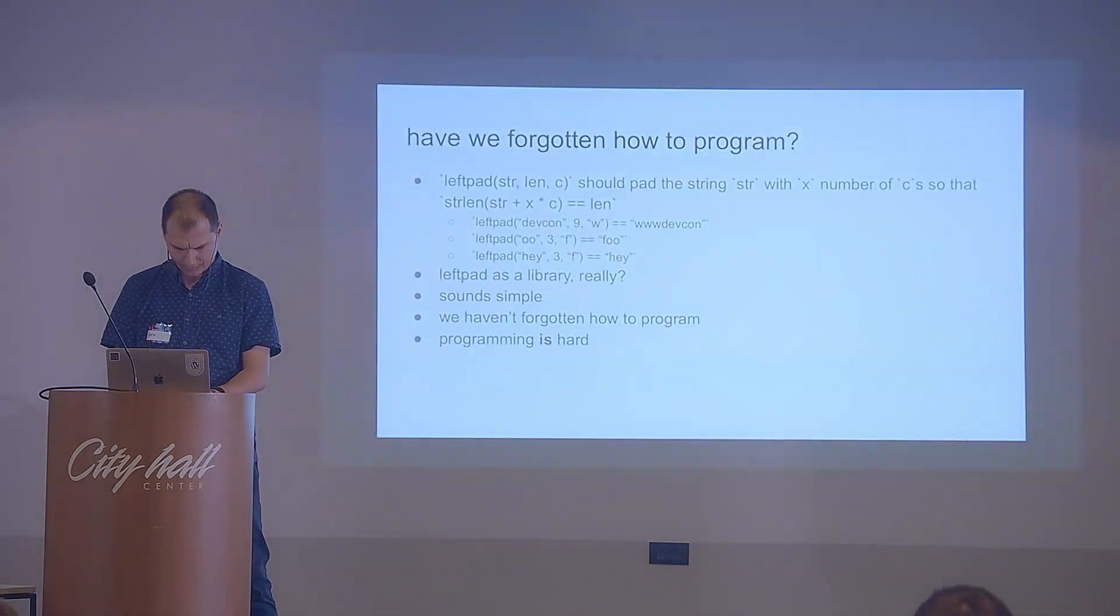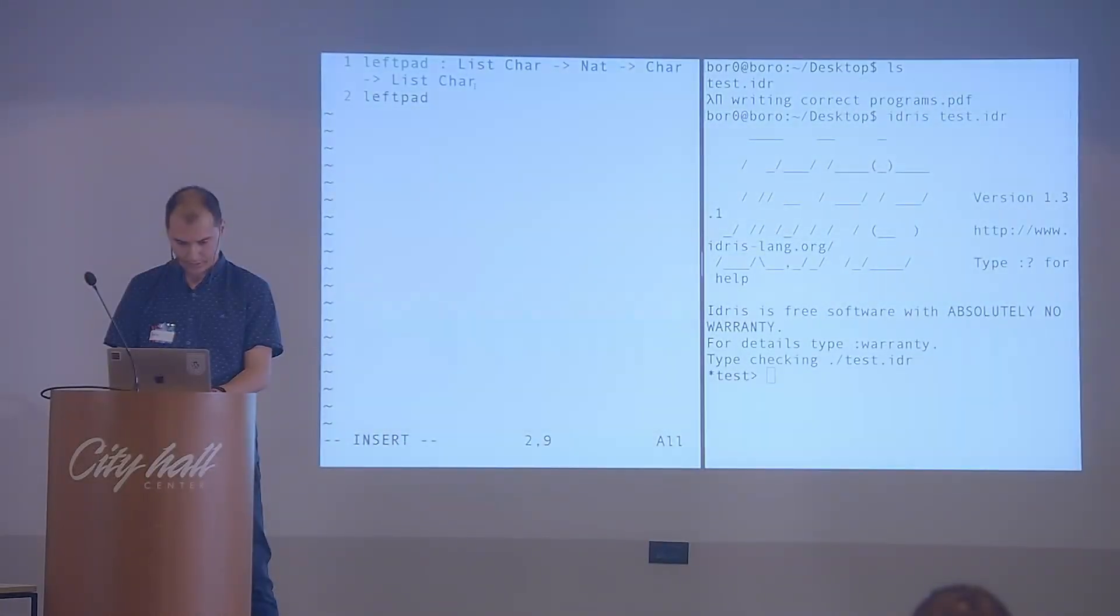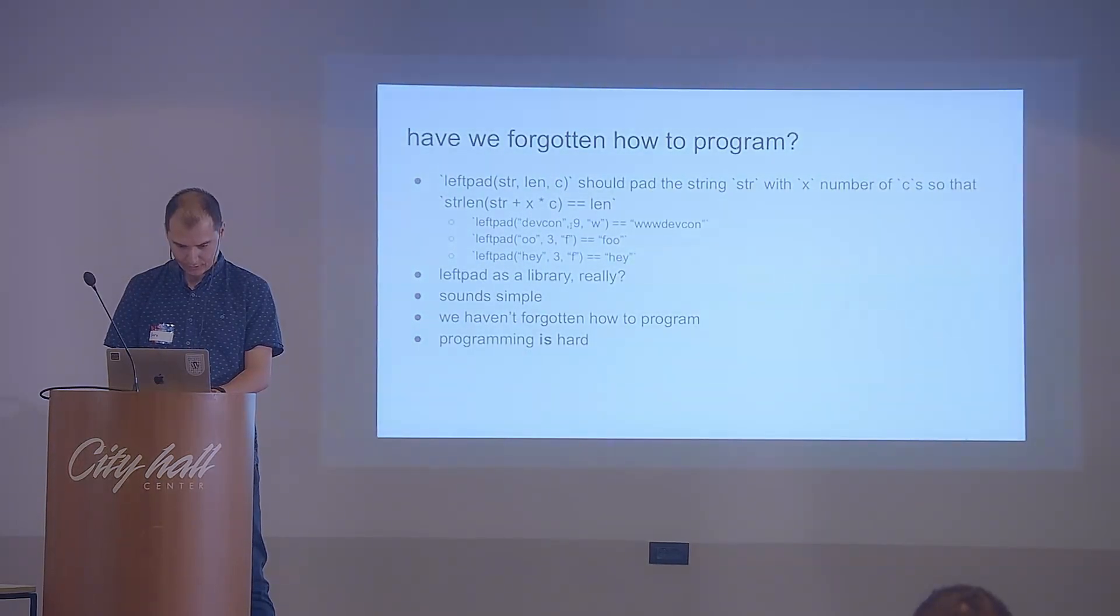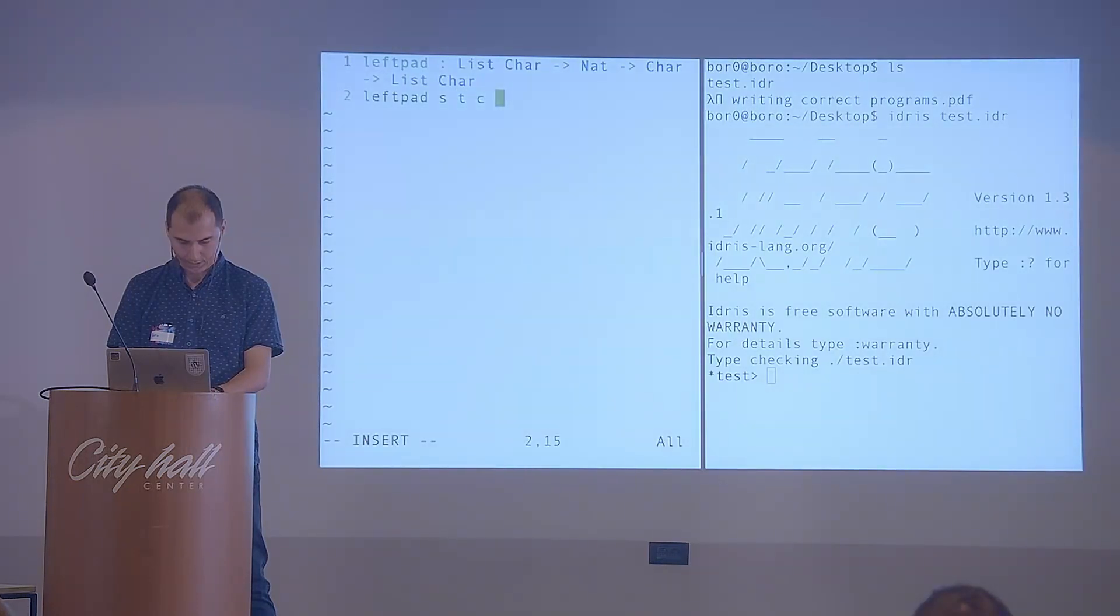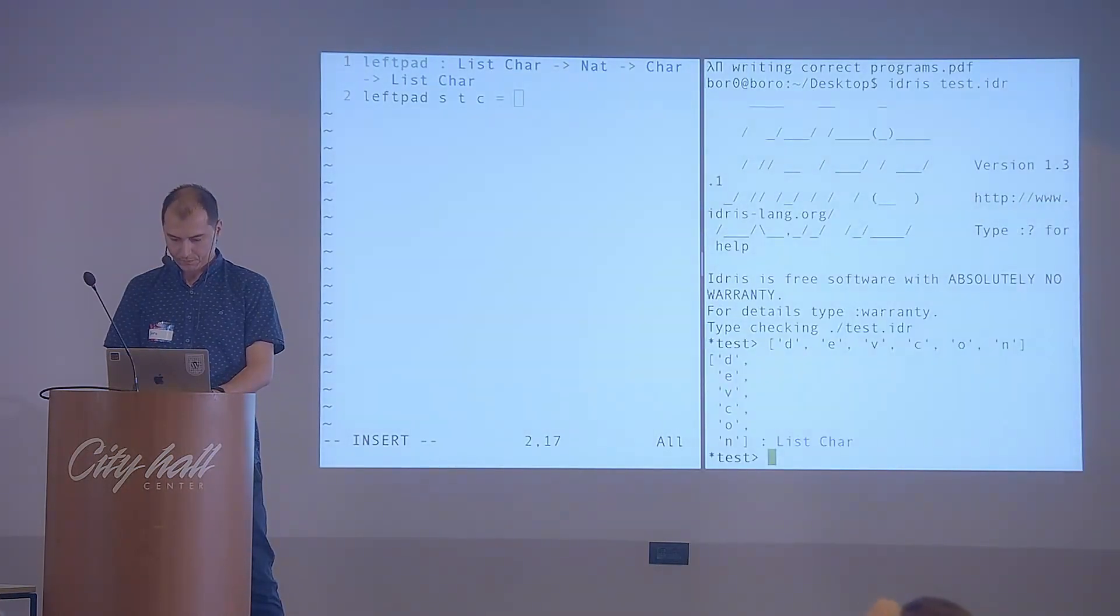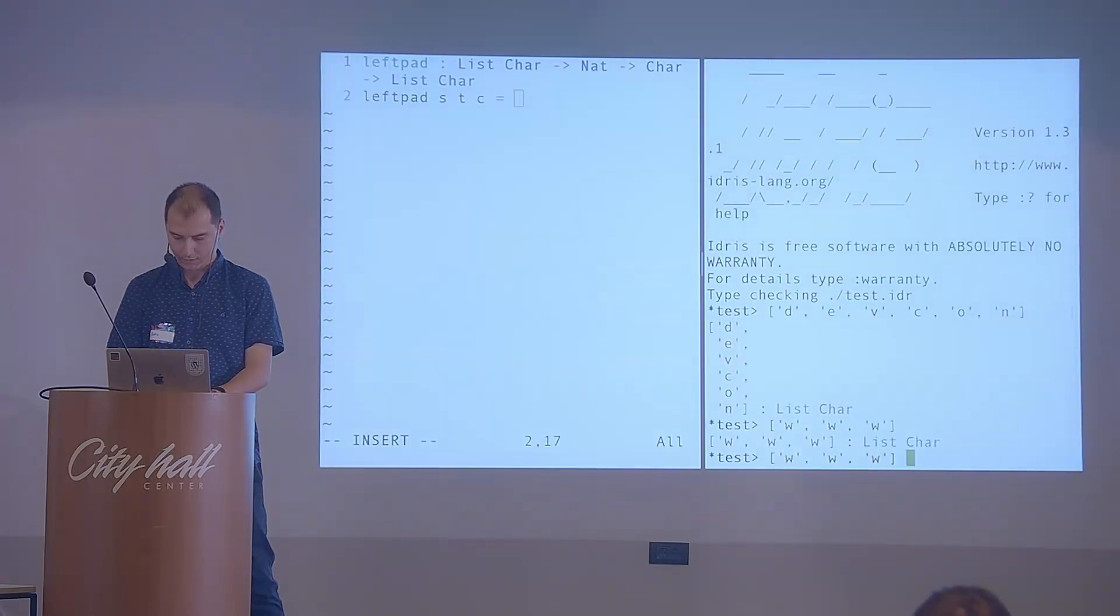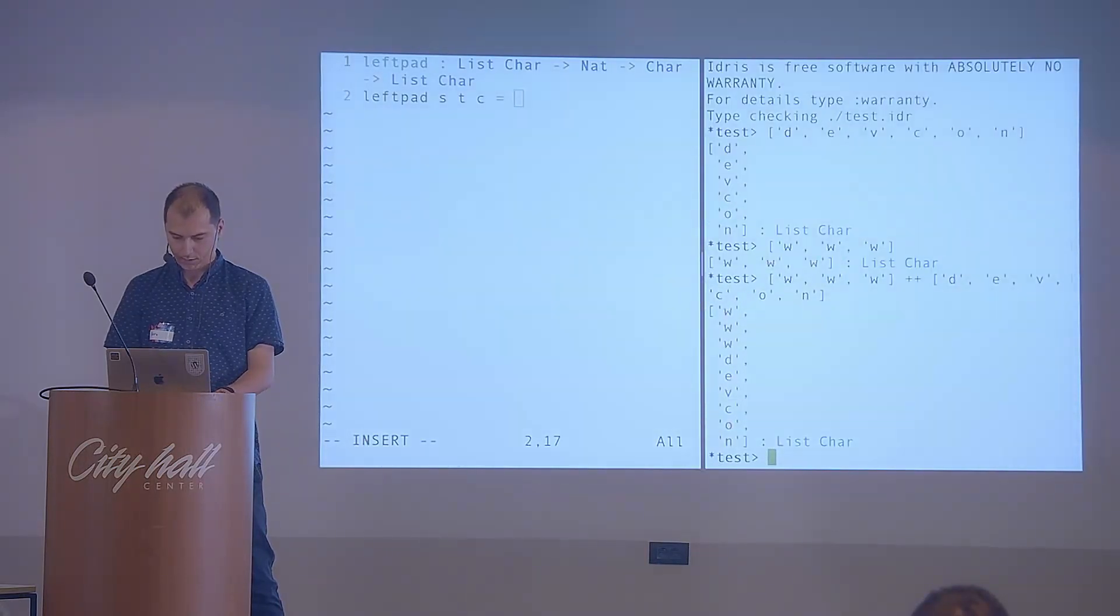So left pad of, what we're going to do right now is, we're going to write the program that corresponds to this type definition. So left pad of, let's say, string, target, and character. For, let's say, we have this string, and what we want to do is prepend and we want to do it three times. So we would have something like w, w, w, like this. And we want to concatenate these two strings. Idris has a looping function for that. It's the double plus sign. And this is how we would implement left pad manually for now.